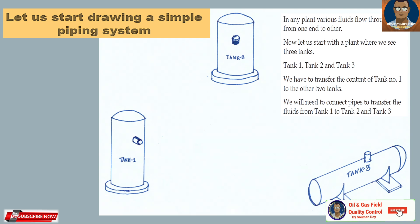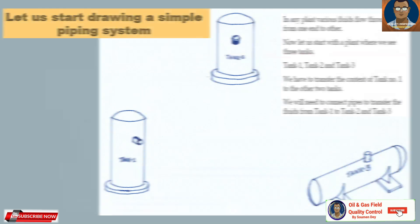We have to transfer the content of tank 1 to the other two tanks — this is the basic purpose. We will need to connect pipes to transfer the fluids from tank 1 to tank 2 and tank 3.